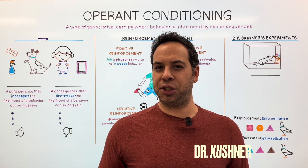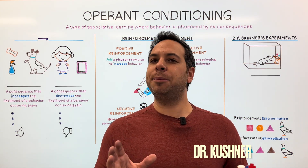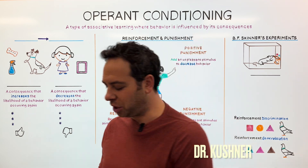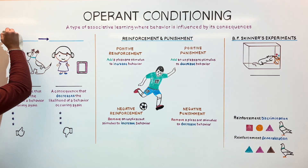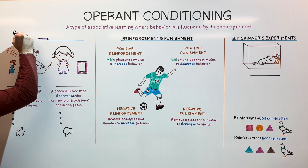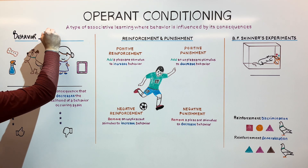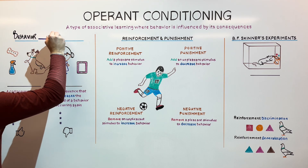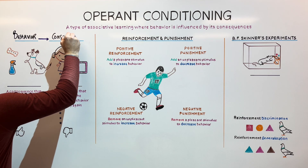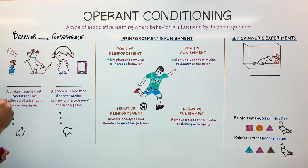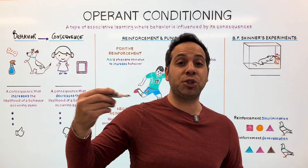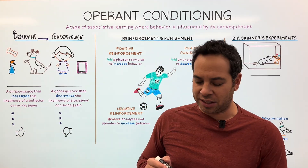To understand operant conditioning, you have to believe in the universal principle applied across all species. That principle is that every behavior — everything you do, all the choices you make — are followed by a consequence. A consequence is our key word. The consequence is going to decide whether that behavior is going to be repeated and strengthened, or stopped and weakened.